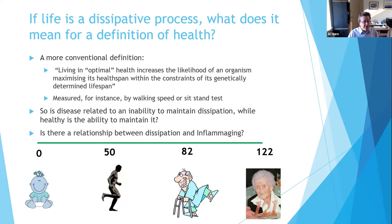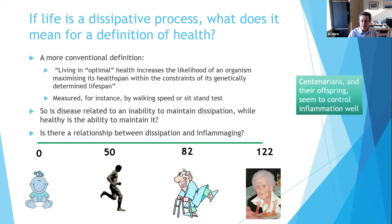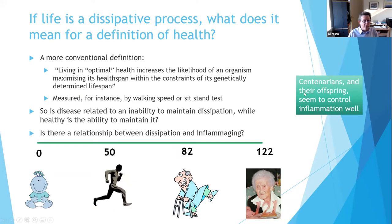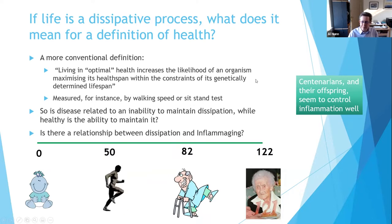Recent studies have shown that centenarians — folk who live a very long time, even to a hundred — seem to have a better ability to control their inflammation. This is even seen in their offspring and grandchildren. So this is telling us something.